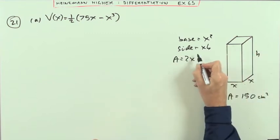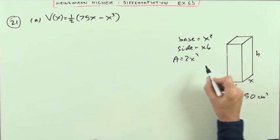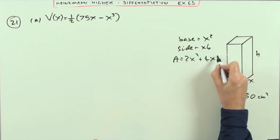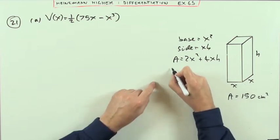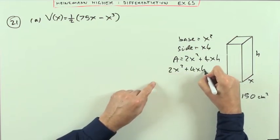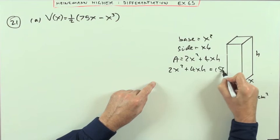Which means the total surface area should be, I've got two of the base, so that's 2x squared, and I've got four sides, so plus 4xh. So 2x squared plus 4xh should equal 150.